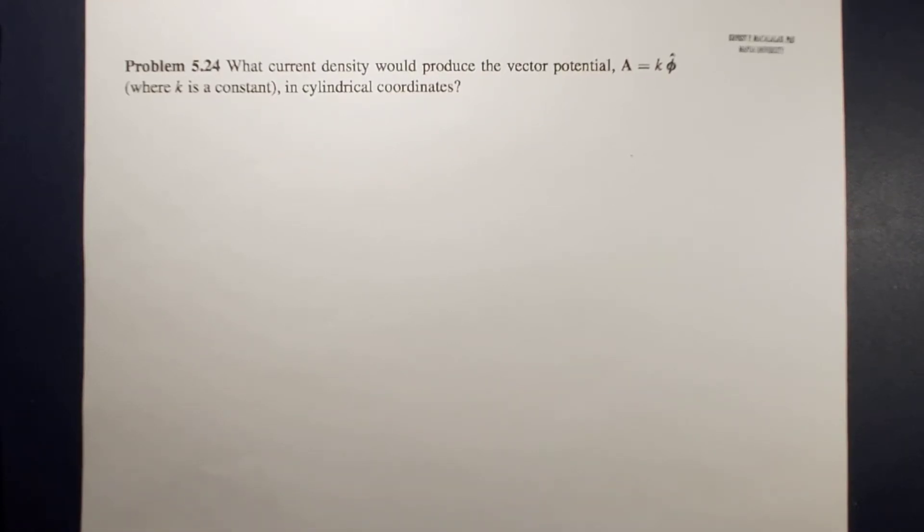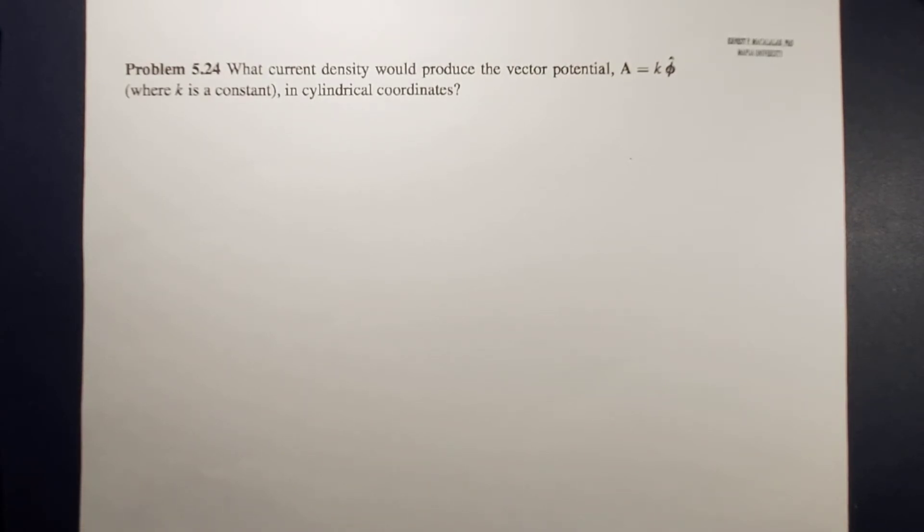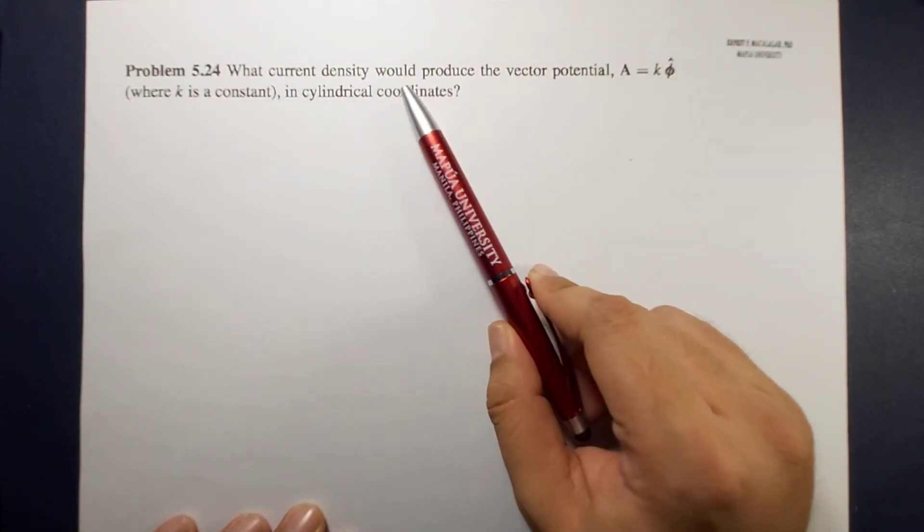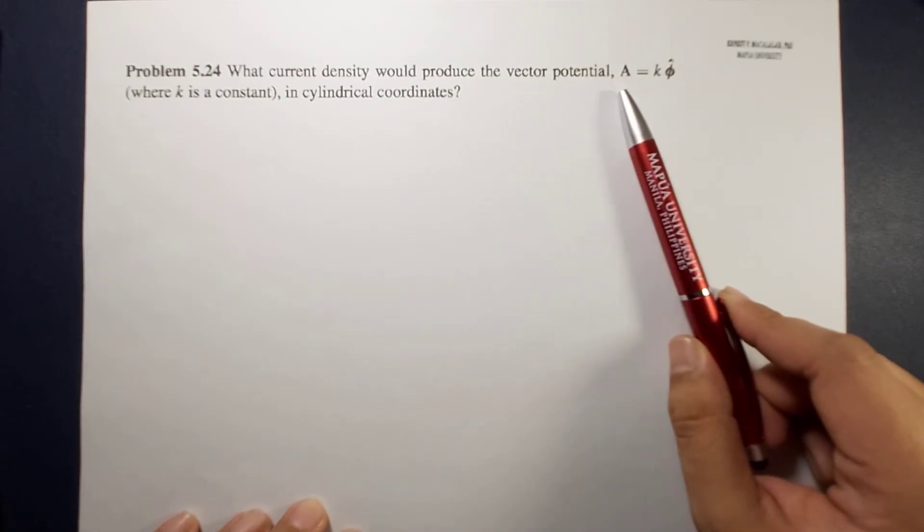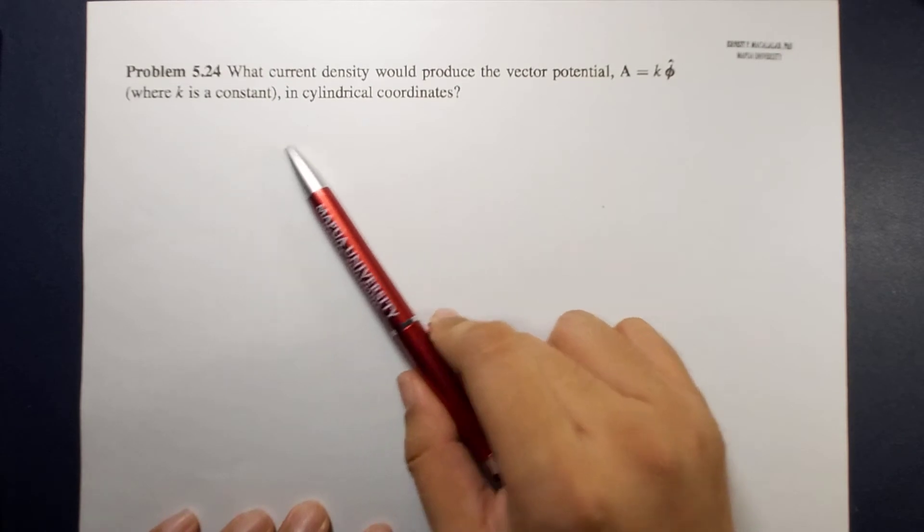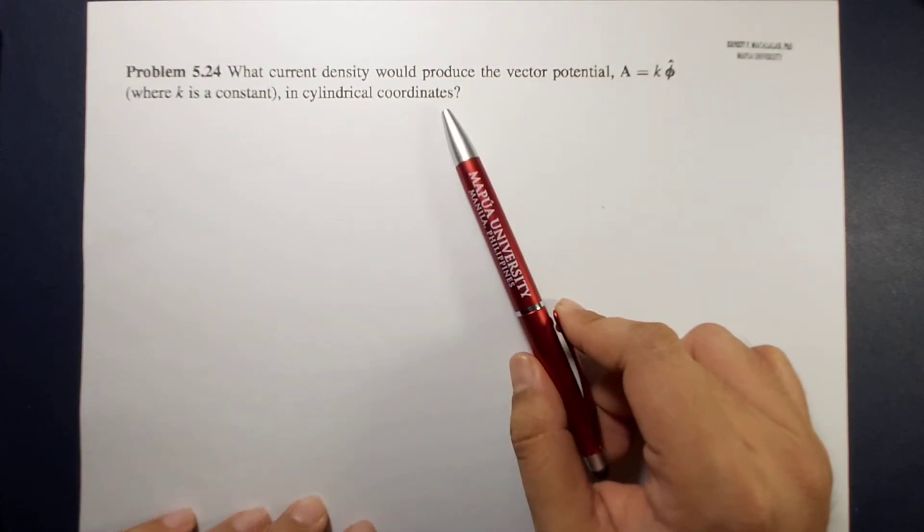Hello guys, it's me again, Sir Ernest, and today we are going to solve a problem involving magnetic vector potential. The problem reads: what current density would produce the vector potential A equals k phi hat, where k is a constant, in cylindrical coordinates?